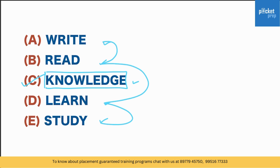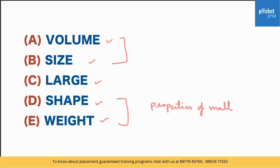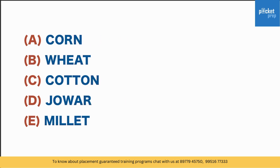Here we have: volume, size, large, shape, weight. This is slightly tricky, but you can answer it. Volume, size, shape, and weight are all properties of matter. Large is something which quantifies one of those properties — that is size; it could be large or small — but as such it is not a property itself. Therefore large is the odd one out.